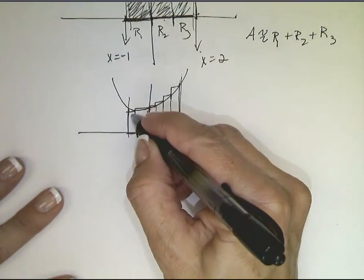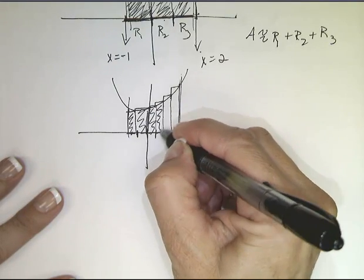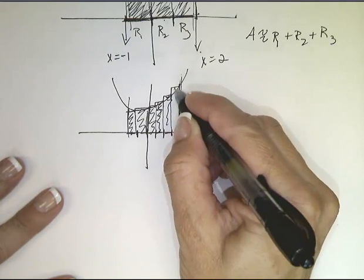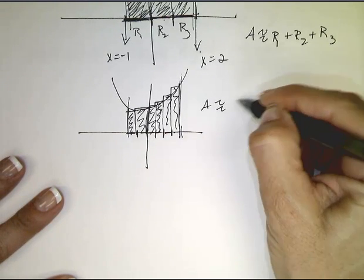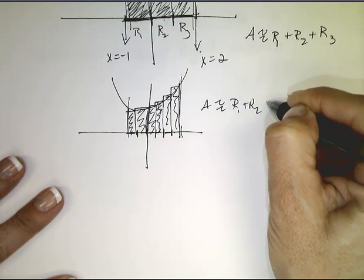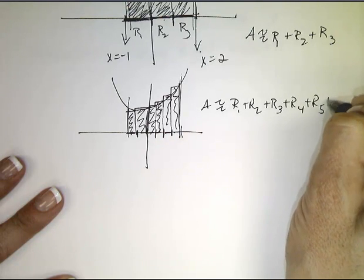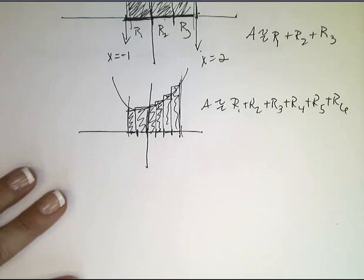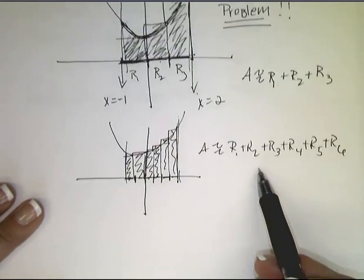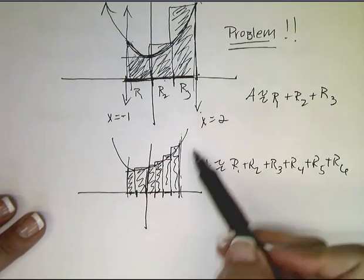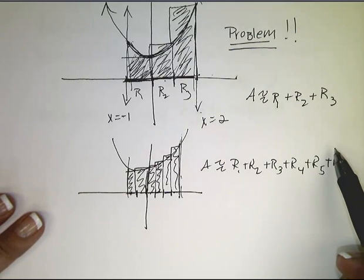And I say, well, now I'm saying, and I'm guessing that you would agree, that the area is about R1 plus R2 plus R3 plus R4 plus R5 plus R6. And it's not exactly equal to it, but it's about it. And I bet you would agree that it is better about it than this original picture. Agreed?